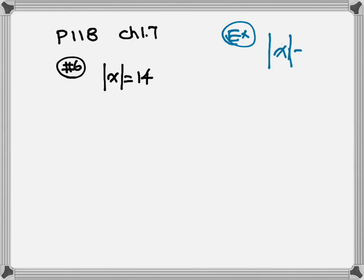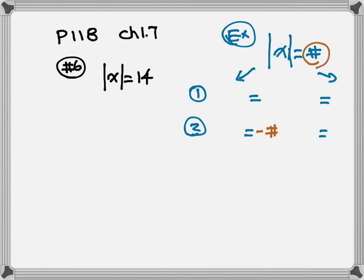Step one: you're going to separate into two different equations — put two equal signs. Step two: the equation on the left always equals the negative number, so whatever that number is you put a negative sign. The equation on the right always equals the positive number.